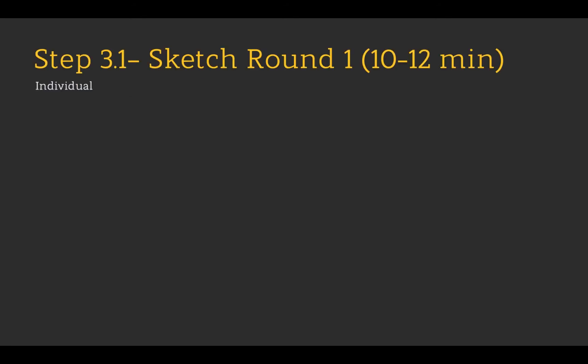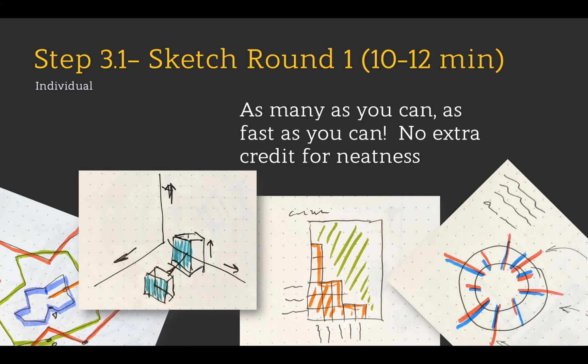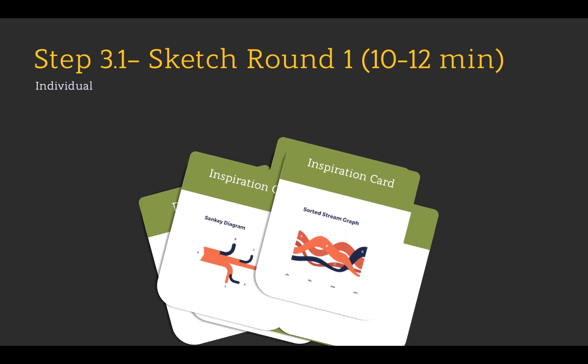Next, we go back to an individual activity: the first sketch round. You have about 10 to 12 minutes. The goal is to create as many sketches as you can, as fast as you can — there's no extra credit for neatness. Sketch solutions that might address the domain tasks you've agreed on as the important ones for this workshop. Each individual visualization doesn't need to solve everything; you can later worry about combining them and adding interactivity. If you get stuck, we've also provided inspiration cards — idea cards you can look through to jog your memory about different visualization techniques and visual encoding ideas. Just flip through them; they might inspire you.